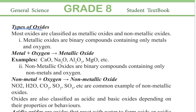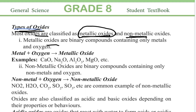Types of oxide. Most oxides can be classified as metallic oxide or non-metallic oxide. Metallic oxide is a binary compound containing only a metal and oxygen.